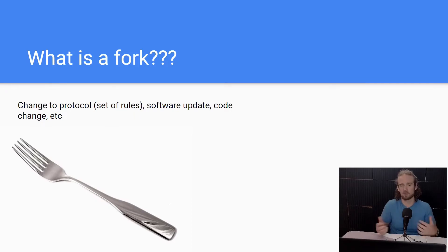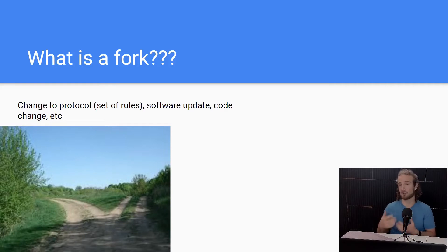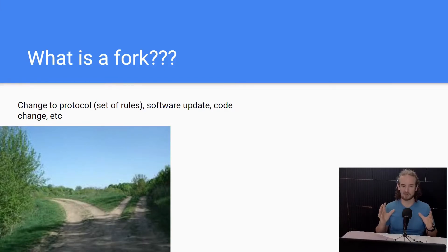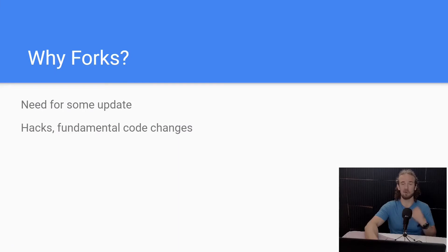I think a fork in the road is a better analogy because it shows a divergence, a change in the project. Within this, there are really two kinds of forks. The first is a soft fork, and we're not going to spend a lot of time on soft forks because they're not really contentious — they're more of a software upgrade, generally backwards compatible. What we're talking about in this video is the spectacular shock-and-awe hard forks — the forks that everyone's talking about, with massive changes to a cryptocurrency project that can result in a new cryptocurrency being born altogether.